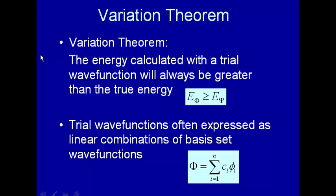A key part of the variation method is the calculation of energy and the variation of parameters in order to minimize that energy. You might ask how do you know that the minimum energy and the collection of parameters that give that minimum energy — how do you know that's the best thing you can do? Well, that has to do with the variation theorem: the energy calculated with a trial wave function using the variation method will always be greater than the true energy.